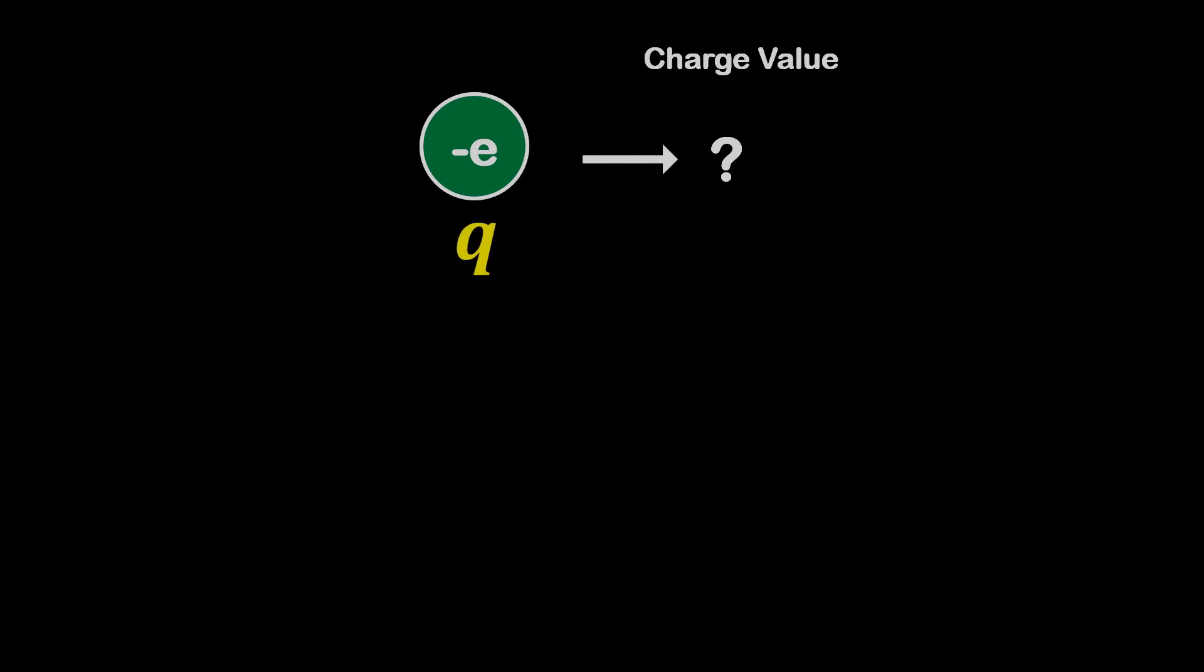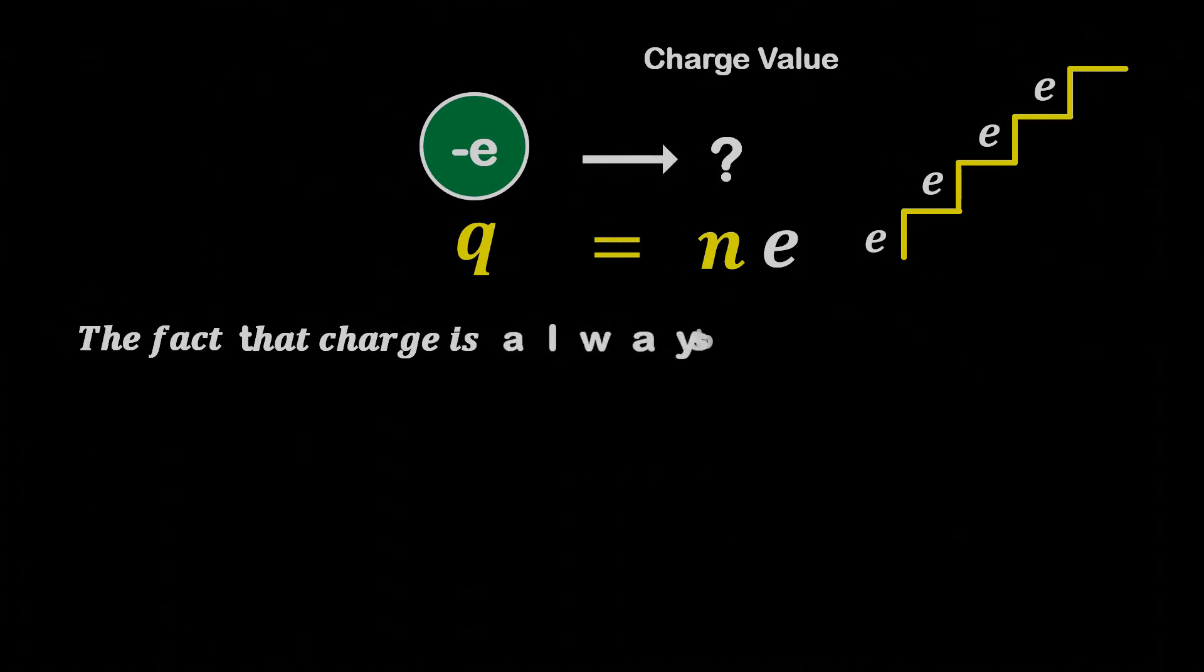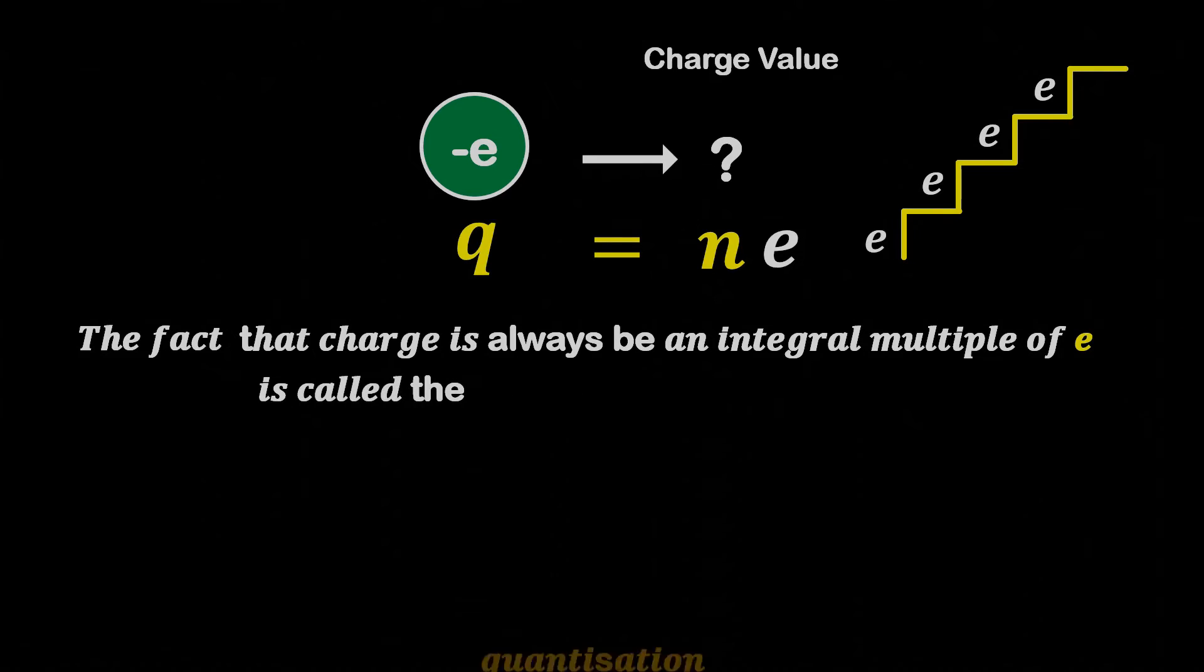This means that the charge Q on any body can be represented as the total number of charge particles N multiplied by e, and charge will increase or decrease in the steps of e. The fact that electric charge will always be an integral multiple of e is called the quantization of charge.